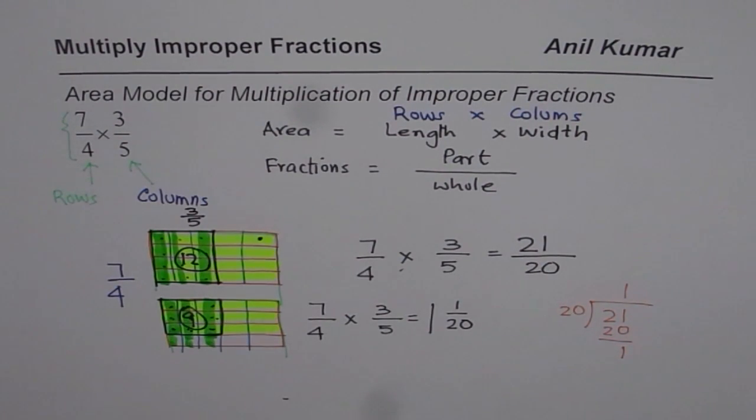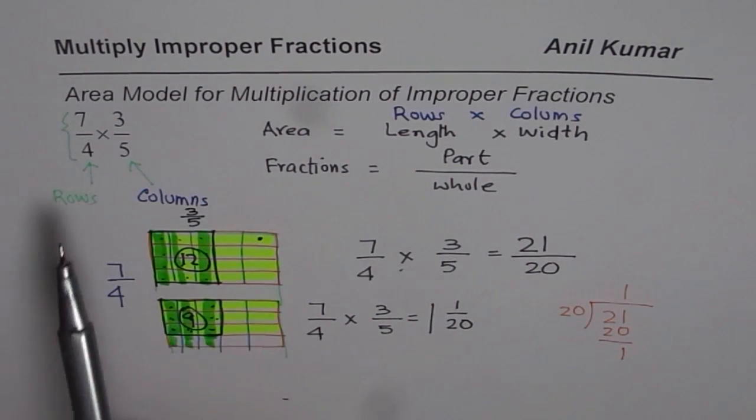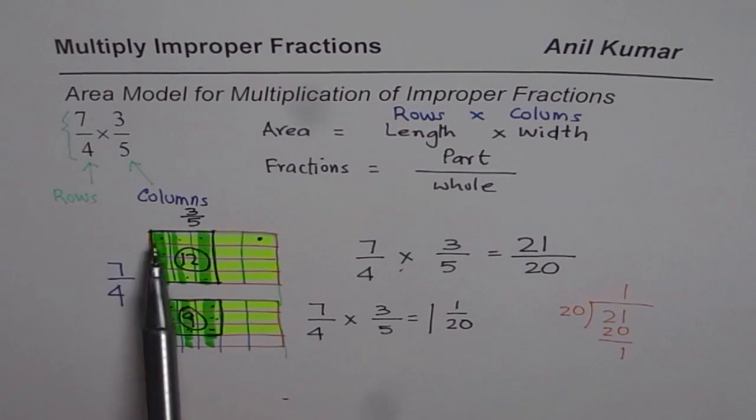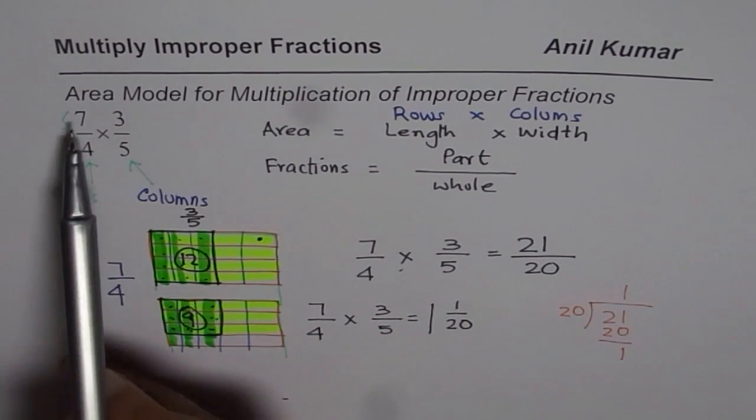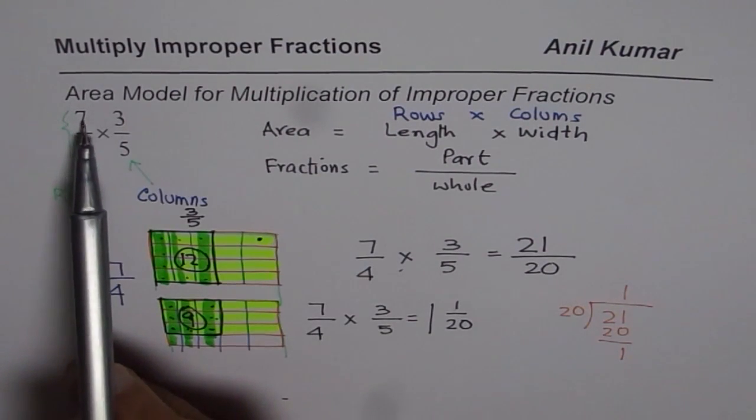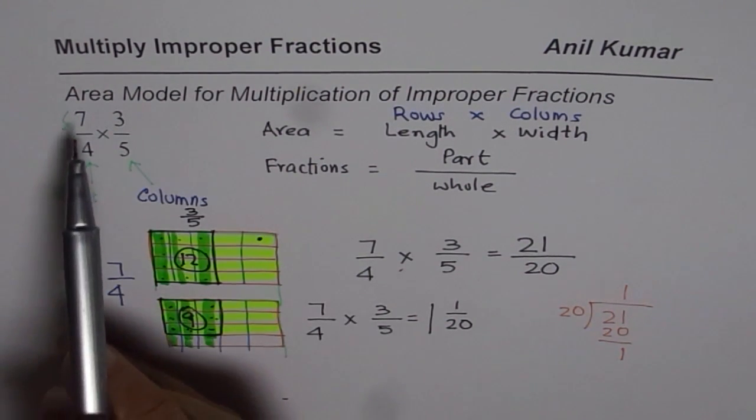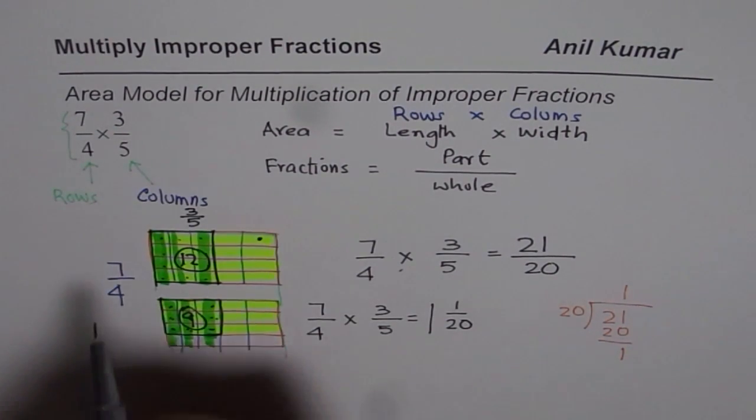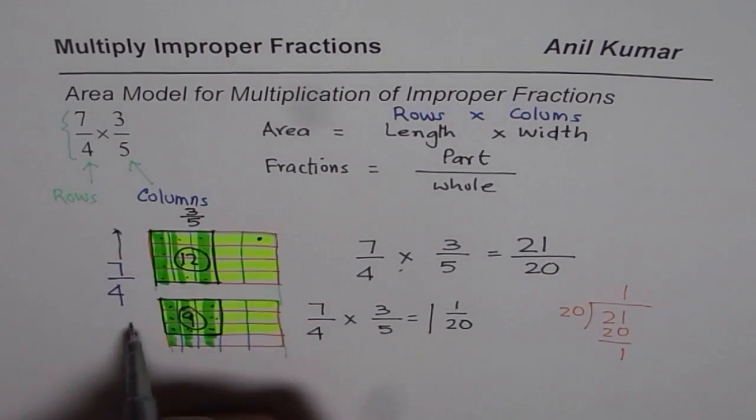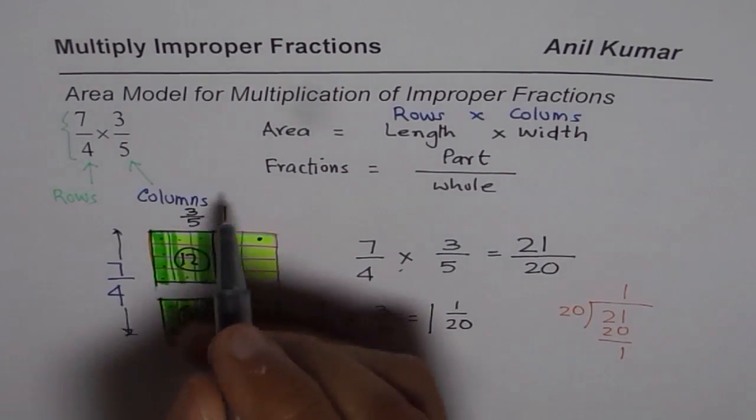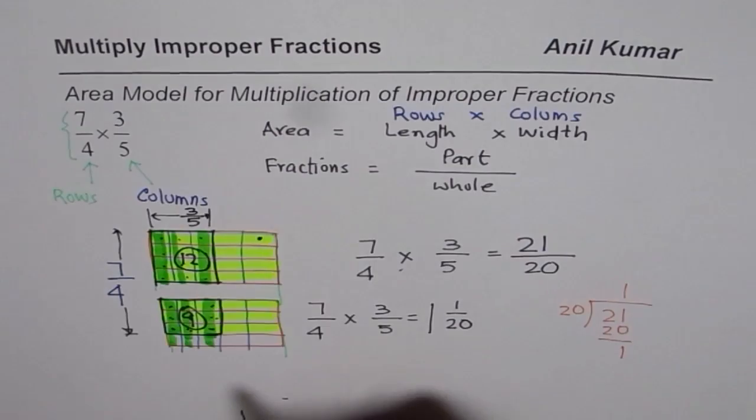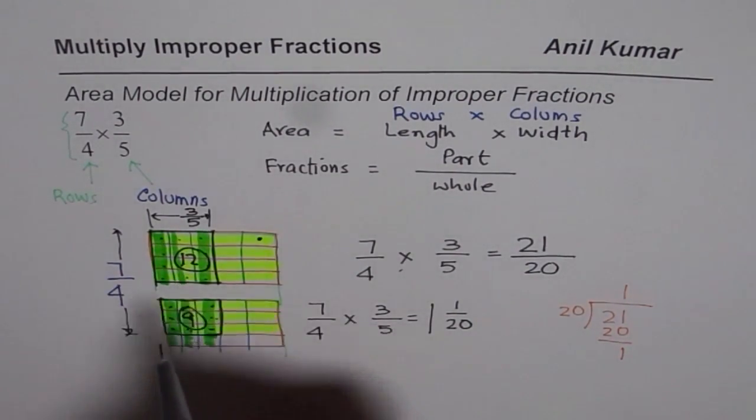I hope with this, you have understood the concept. The basic concept is number of rows and columns in a rectangle will be represented by the denominator of your fractions. So make a rectangle with 4 rows and 5 columns. Then the second step is, if the first term is row, second is column, shade 7 rows. Now since we had only 4 rows, we had to draw another rectangle to incorporate 3 more. So we get 7 out of 4. Then work on the columns. We have 5 columns and shade 3 out of them. So 3 out of 5 has been shaded. The common portion represents the product.